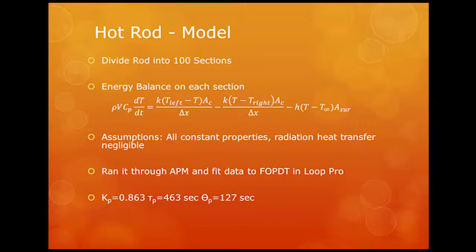We modeled this rod by breaking it up into 100 different sections. We formed an energy balance on each section. The energy balance used Fourier's law and Newton's law of cooling, so we have conduction in, conduction out, and convection out. All those things influence the temperature of each individual section.